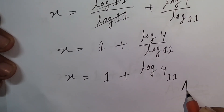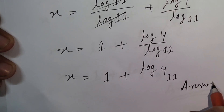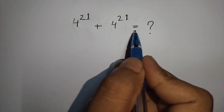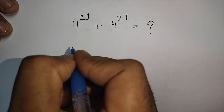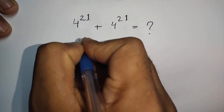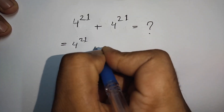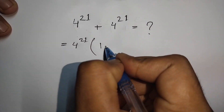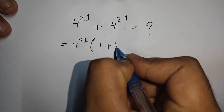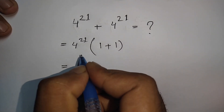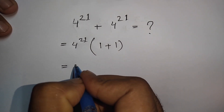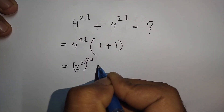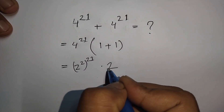This is the value of x. Now, how to solve 4 to the power 21 plus 4 to the power 21? First, take 4 to the power 21 as common factor. Inside the bracket we get 1 plus 1, which equals 2. So 4 to the power 21 times 2.